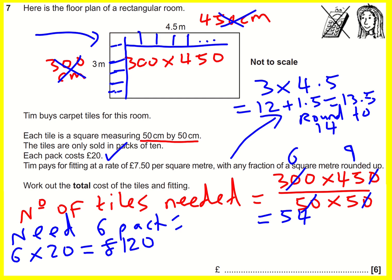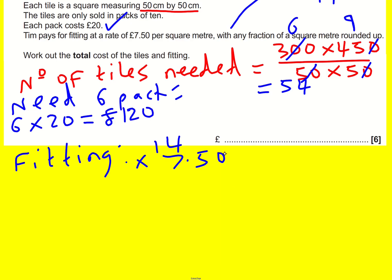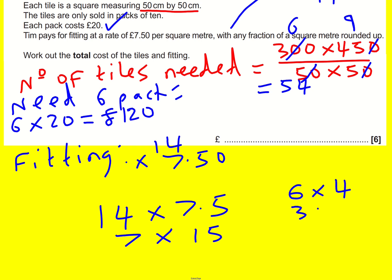So it's £7.50 per square metre, meaning fitting is going to be 14 times 7.50. You could work this out using decimal multiplication, but here's a slightly quicker way. I can do 14 times 7.5, then double the 7.5 to 15 and halve the 14 to 7 — they are the same thing. Just like 6 times 4 equals 3 times 8. This is much easier now because 7 times 15 is 70 plus 35, which is 105.